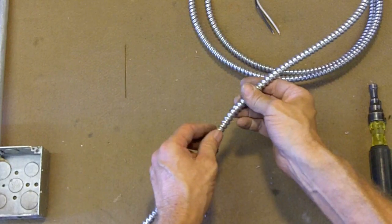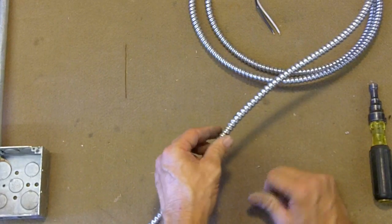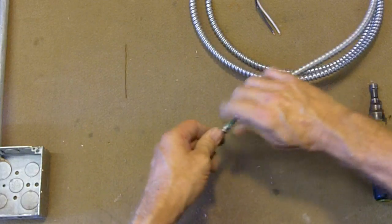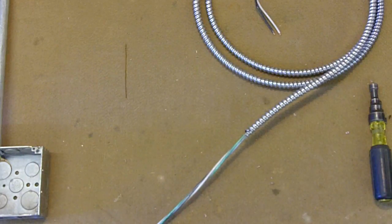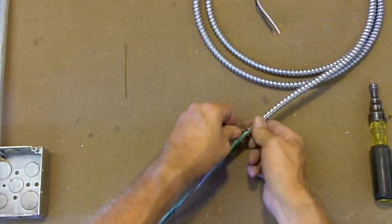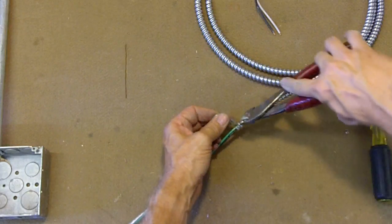This is a preferred method. I know a lot of contractors that if you don't have an MC splitter and you're using your dykes or hacksaw or something like that, that's pretty much a no-no to them.